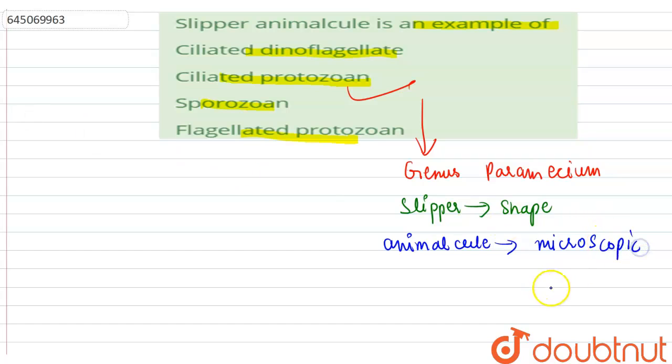So the correct answer is ciliated protozoan. Slipper animalcule is an example of ciliated protozoan, as it is the common name of a ciliated protozoan of the genus Paramecium. The other options are incorrect. Thank you.